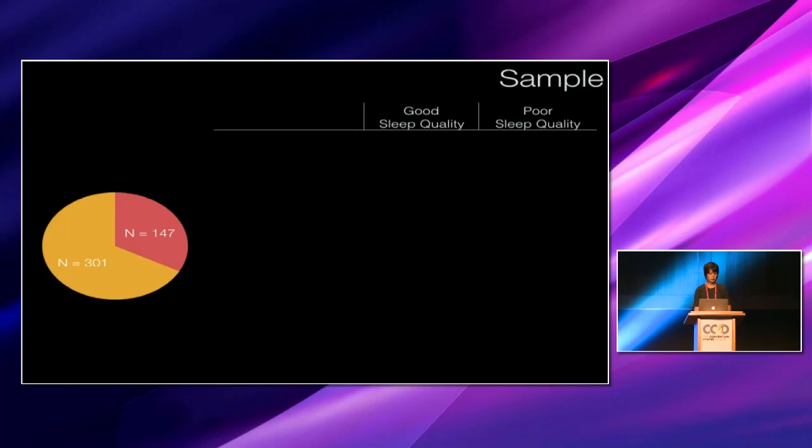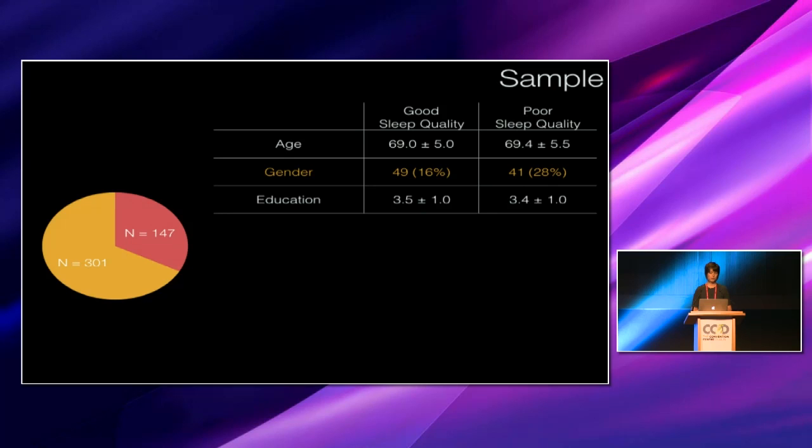And comparing the groups, the good and poor sleepers were similar in terms of age, on average 69 years old. The poor sleepers contained a higher proportion of females. They weren't different in terms of their education level, which fell between A-levels, taken at 18 in the UK, and degree level.